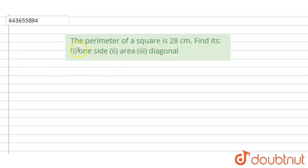Hi, welcome to this video. The question is: the perimeter of a square is 28 centimeters. Find its first part, one side; second part, area; and third part, diagonal.